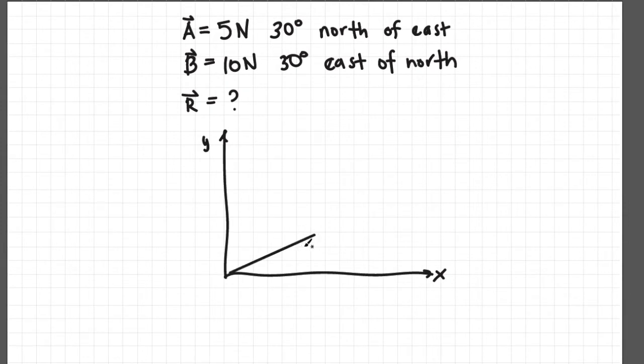Let's suppose this is vector A, which is 5 Newtons and its angle is 30 degrees. This is vector A.